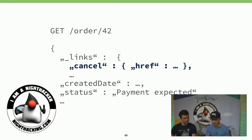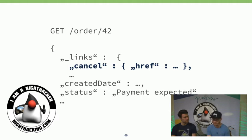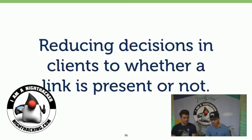This approach allows the server to freely change the value used for the status field. The coupling doesn't come from the left side of the data — of course the client needs to know there's a status field — but the problematic coupling came from the client interpreting the right side of the key-value pair, i.e., the actual status value string.